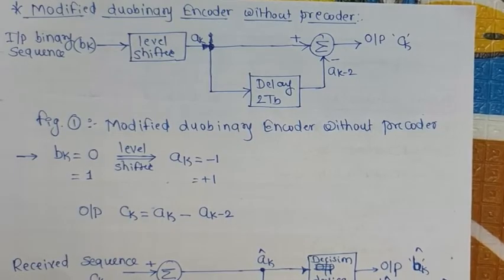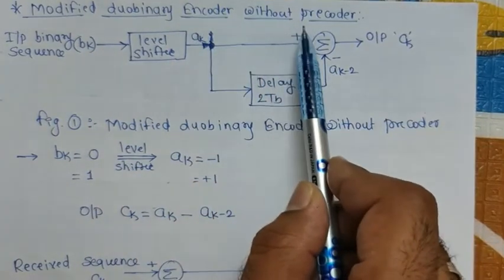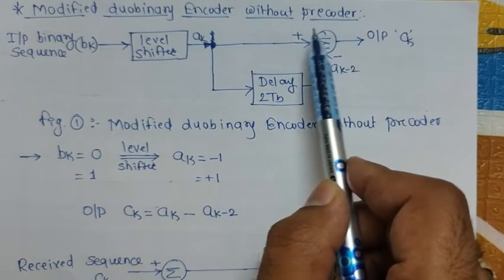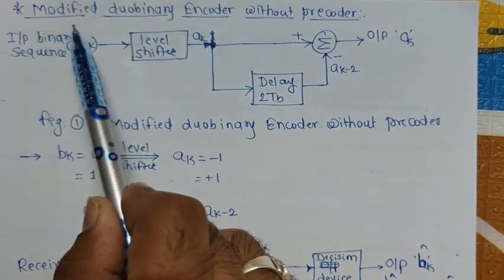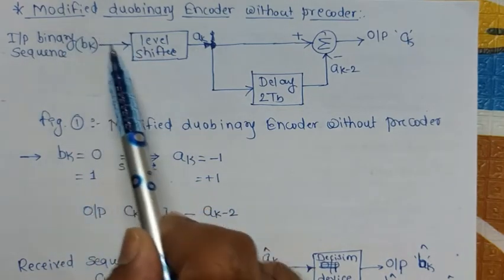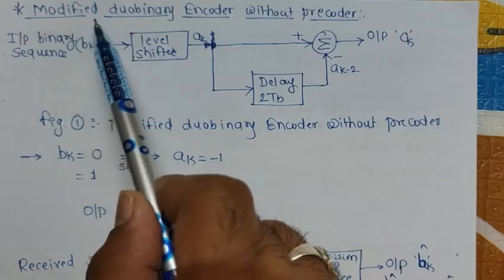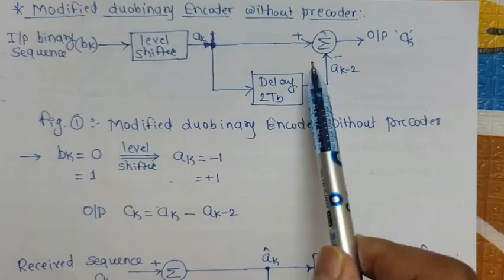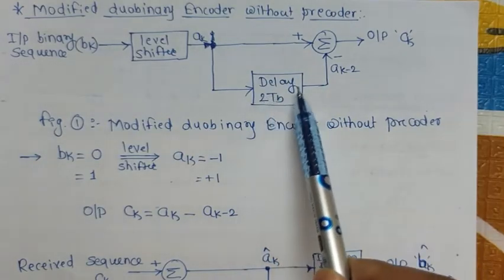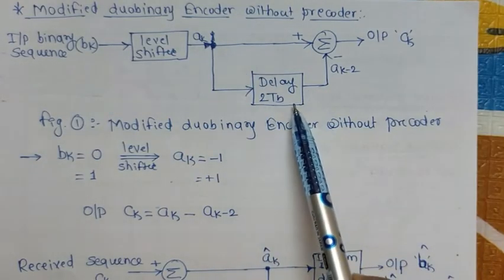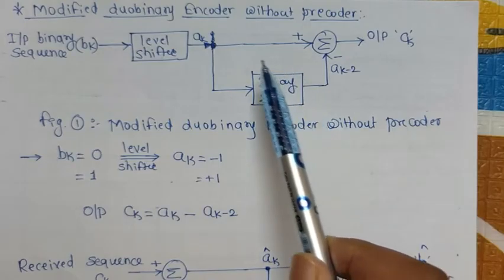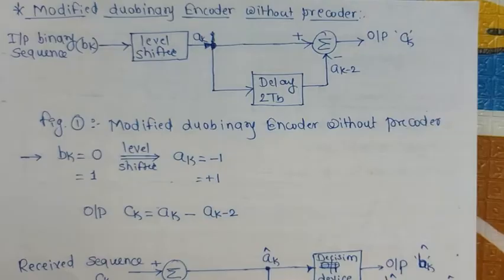In this session we'll discuss the modified duo binary encoder with and without pre-coder. First we'll see it without pre-coder and then with pre-coder. The modification compared to the previous duo binary encoder is the delay: in the previous case the input sequence was delayed by a single duration (1 Tb), but in this case the delay is two durations (2 Tb). That is the only difference between modified duo binary and duo binary encoder.